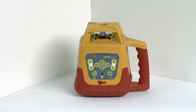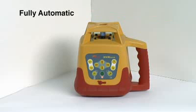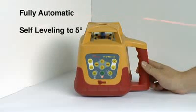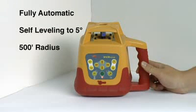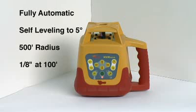The HVR-505R is fully automatic, self-leveling to within 5 degrees, has a radius range of 500 feet, and is accurate to an eighth of an inch at 100 feet.